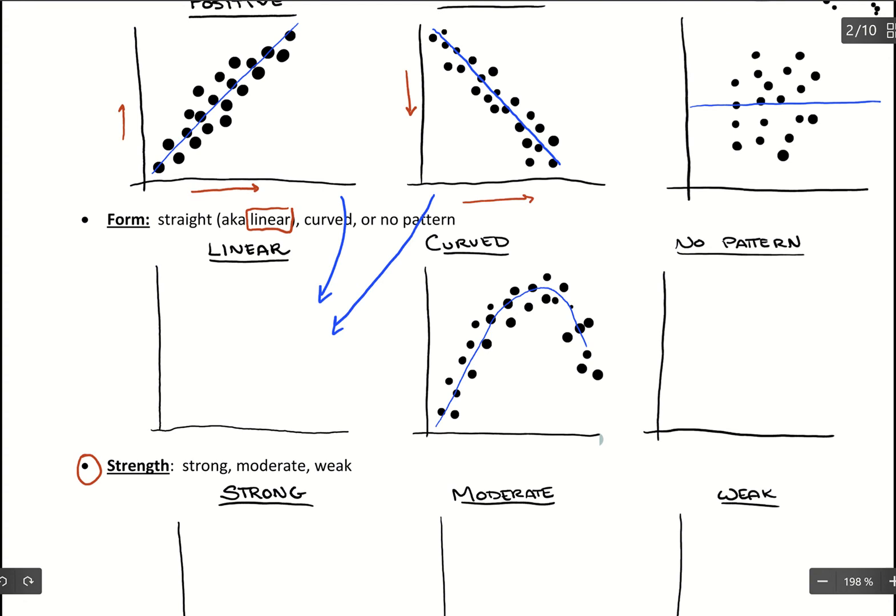And then with the no pattern, that's the case where it just looks like a blob of stuff and you can't see any sort of form or direction to it.